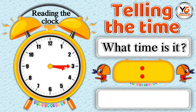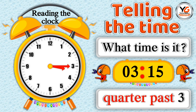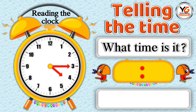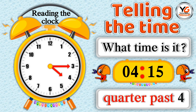What time is it? 3.15 means quarter past 3. What time is it? 4.15 means quarter past 4.